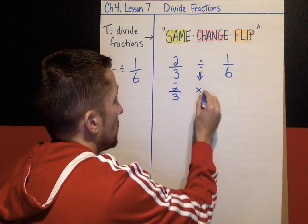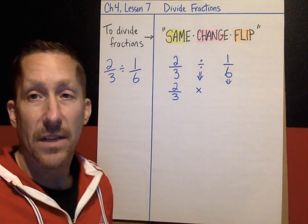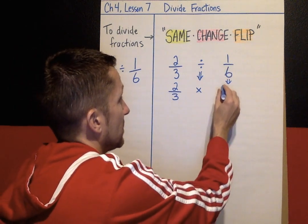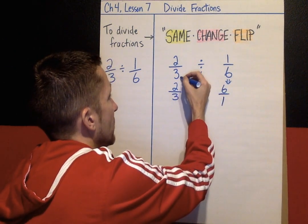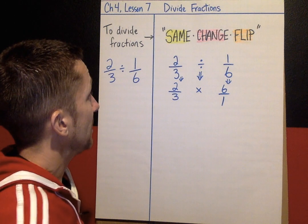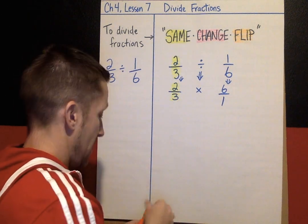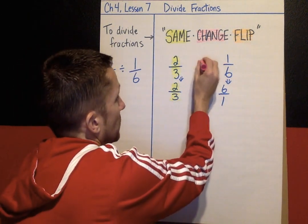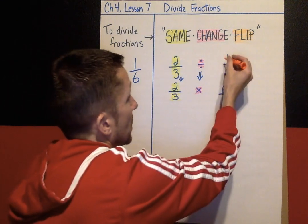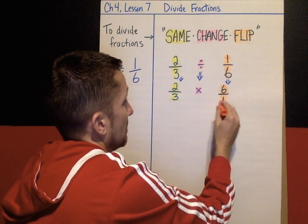Dividing changes to multiplying, and this fraction gets flipped — or, as we learned in the last lesson, that's called the reciprocal. We want the reciprocal of 1/6, which is 6 over 1. Same Change Flip: this fraction stays the same, so 2/3 stays 2/3. Change means you started with dividing but you're changing it to multiplying. And finally, the flip means you want the reciprocal of the second fraction — the divisor, what you're dividing by.